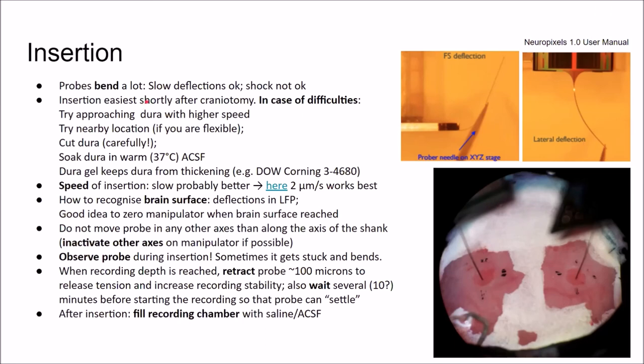But the point is that it could be quite difficult to enter the dura because of this flexibility. So it's easiest if the dura is fresh, shortly after craniotomy. But if you have difficulties, you can try approaching the dura with a higher speed, for example. This sometimes helps. You can try a nearby location if there was some dura growth on the particular location you want to go. You can also cut the dura, but of course just like with a needle, with a hypodermic needle. But you have to be super careful, especially if you want to record from neurons on the surface of the brain. Other people I read said you can soak the dura in warm ACSF just for a few minutes. This makes the dura more flexible. Or you can use dura gel, which you apply shortly after the craniotomy. And then you can go with your probe through this dura gel.